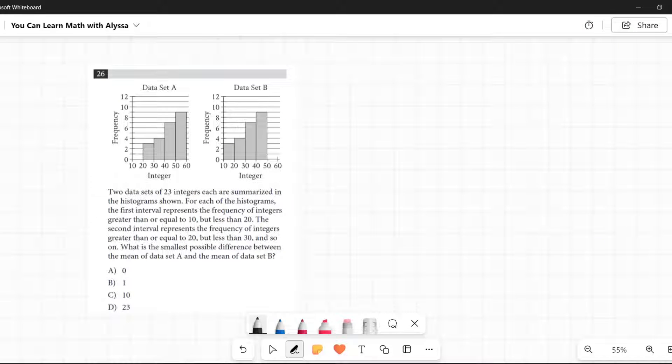Two data sets of 23 integers each are summarized in the histograms shown. For each of the histograms, the first interval represents the frequency of integers greater than or equal to 10 but less than 20. The second interval represents the frequency of integers greater than or equal to 20 but less than 30 and so on. What is the smallest possible difference between the mean of data set A and the mean of data set B?